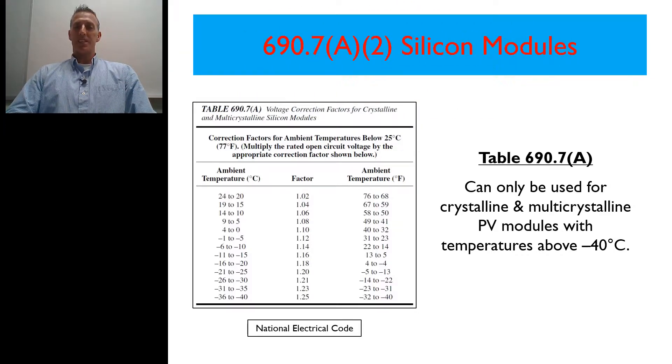In 690.7A2 of the 2017 National Electrical Code, it talks about silicon modules and using table 690.7A. One thing you want to keep in mind with this is that it can only be used when you are using crystalline or multi-crystalline PV modules that operate at temperatures above negative 40 degrees Celsius.